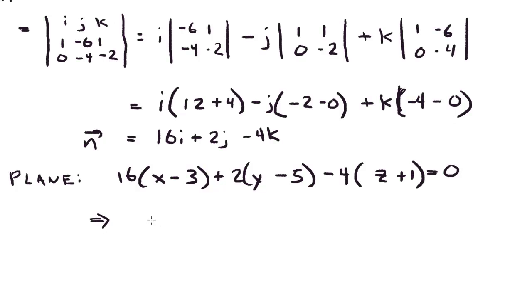We're just going to simplify it a little bit, distribute out everything. So 16x plus 2y minus 4z. And then all the other numbers I'll bring to the other side when I distribute, and I'll get 62. And then this is it, but I notice that I can divide everything by 2. So 8x plus y minus 2z equals 31.